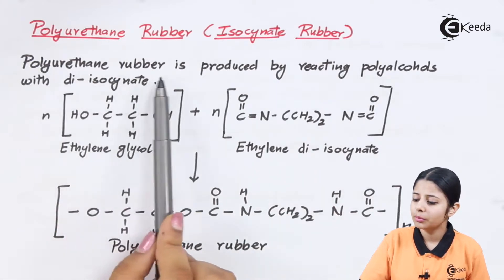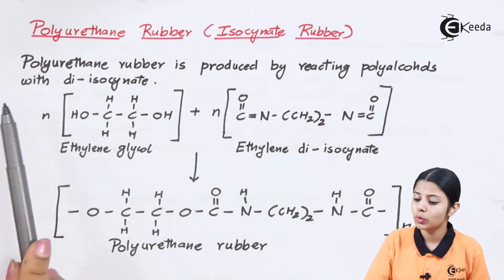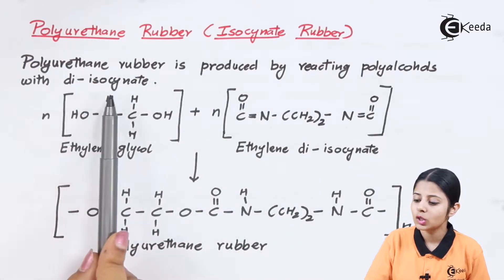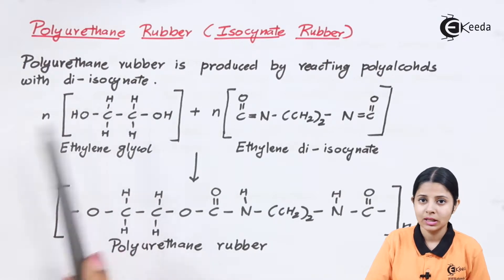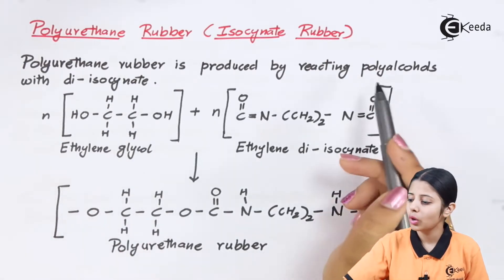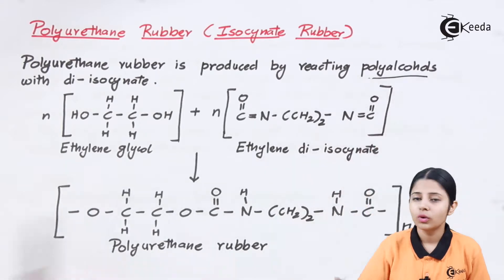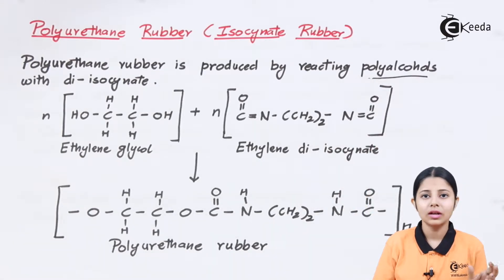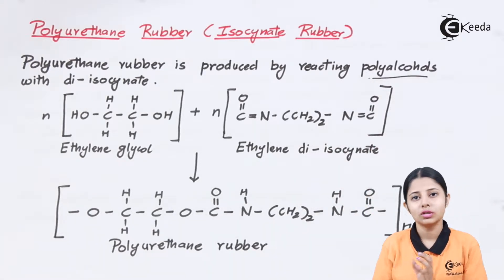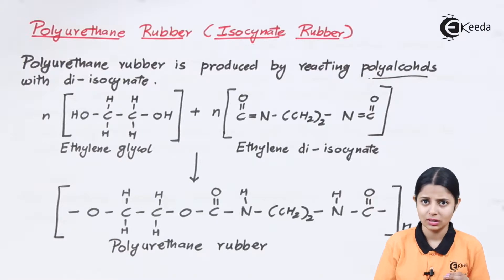Polyurethane rubber is produced by reacting polyalcohols with diisocyanate. First we will study what polyalcohols are, and then we will move on to the next monomer, that is isocyanate.